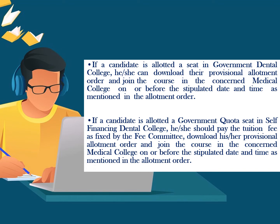If you are allotted a Government Quota seat in a Self-Financing College, you have to pay the tuition fee online, which is fixed by the fee committee. Then you will download the provisional allotment order and report to the concerned college on or before the stipulated date and time.